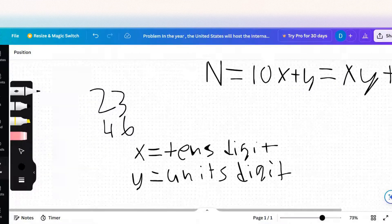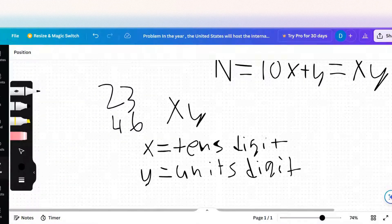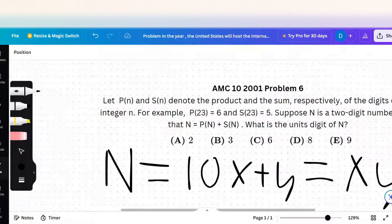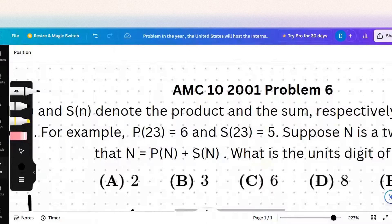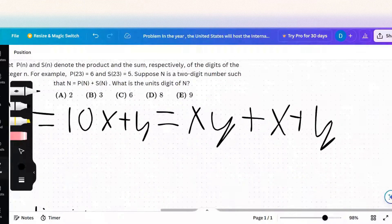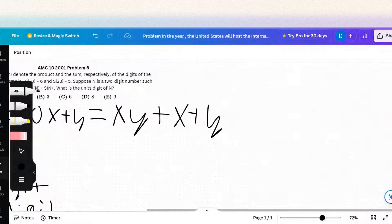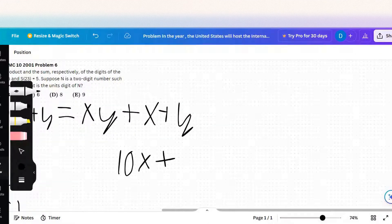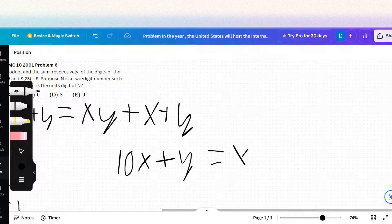It's as simple as that. The sum of the digits is just x plus y, and we see this in our example right here. Product 2 times 3 is 6, and the sum 2 plus 3 is 5. So we rewrite it as this, and here we have a solvable equation: 10x plus y equals xy plus x plus y.